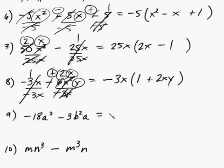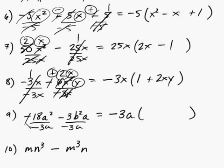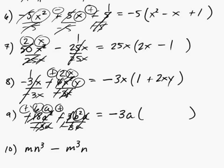For this one, we can factor out a negative sign. Common factor between 18 and 3 is 3. We have a squared and a — lower degree is a. So factor out negative 3a. Set up the parentheses and divide by negative 3a. This cancels positively. Three goes into 18 six times, giving 6a. Then 3 goes into 3 once, a goes with a, and everything cancels except b squared. So you're left with 6a plus b squared, giving negative 3a times (6a plus b²).